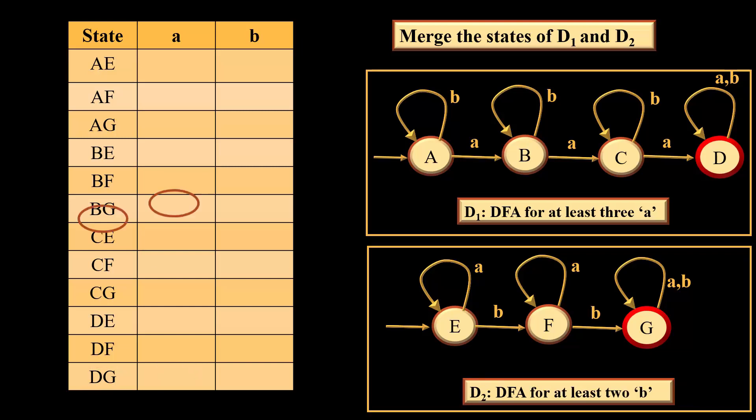Now we will try to identify AE,A, that means transition from A and E on A. This gives us BE, which has been marked with green color. Next we move to AE on B. AE on B gives us AF. Next we move to AF. AF on A gives us BF. AF on B gives us AG. Next we move to AG, the third state. In this we have AG on A gives us BG, and AG on B gives us AG.